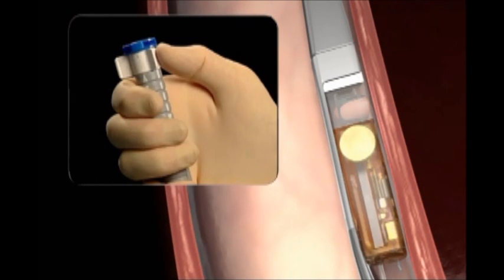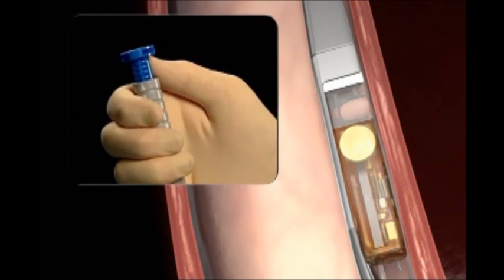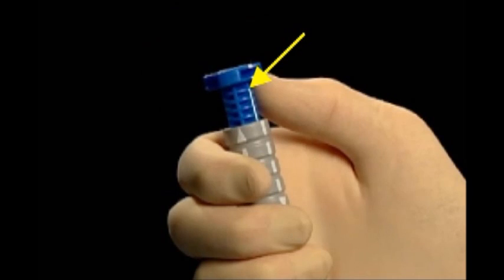To begin the attachment step, first remove the white safety tab. Next, verify the white line on the plunger is aligned with the downward pointing arrow on the handle grip.